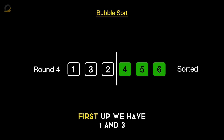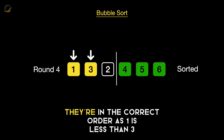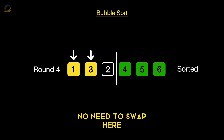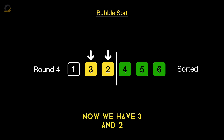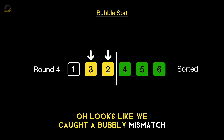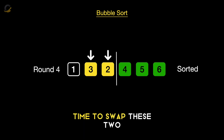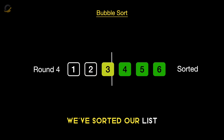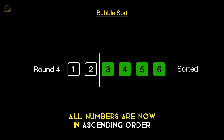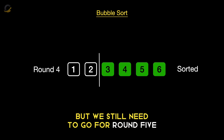In round 4, first up we have 1 and 3 — they're in the correct order, as 1 is less than 3, no need to swap. Now we have 3 and 2. Looks like we caught a bubbly mismatch — time to swap these two. With just one swap, we've sorted our list. All numbers are now in ascending order, but we still need to go for round 5.